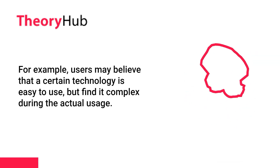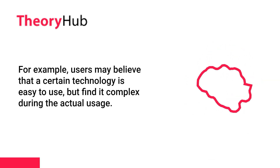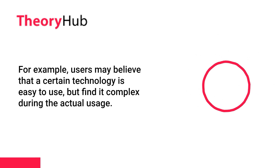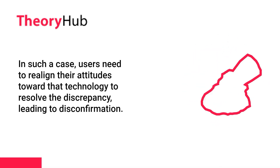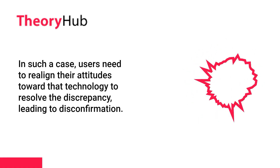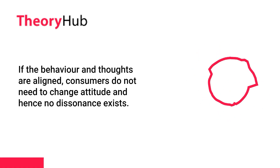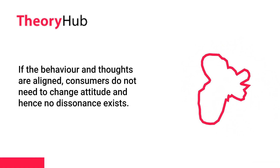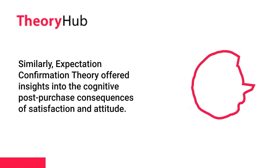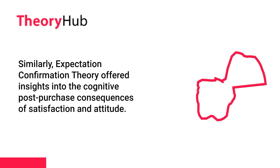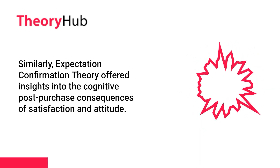For example, users may believe that a certain technology is easy to use but find it complex during actual usage. In such a case, users need to realign their attitudes toward that technology to resolve the discrepancy, leading to disconfirmation. If behavior and thoughts are aligned, consumers do not need to change attitude and hence no dissonance exists. Similarly, Expectation Confirmation Theory offers insights into the cognitive post-purchase consequences of satisfaction and attitude.